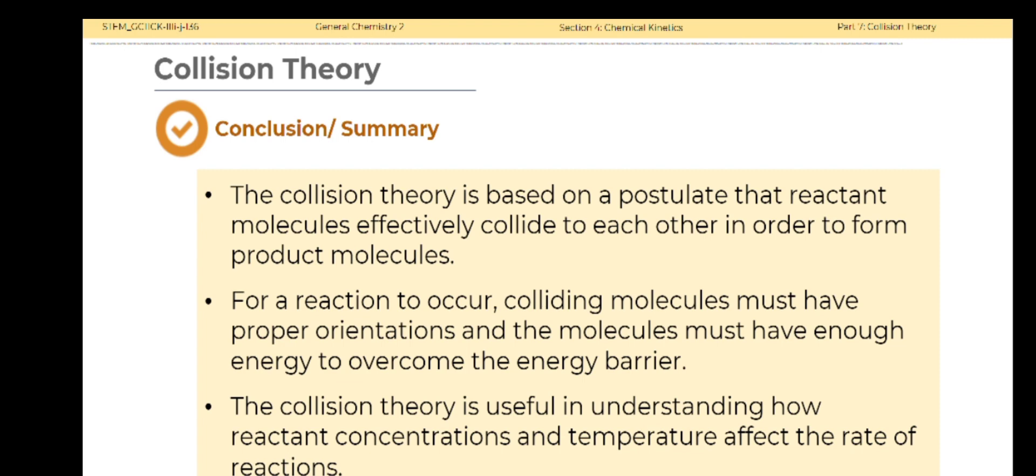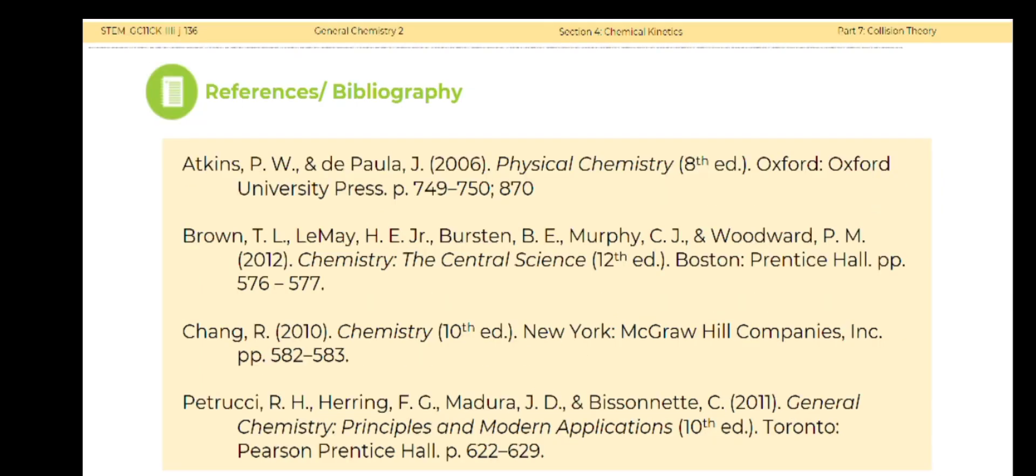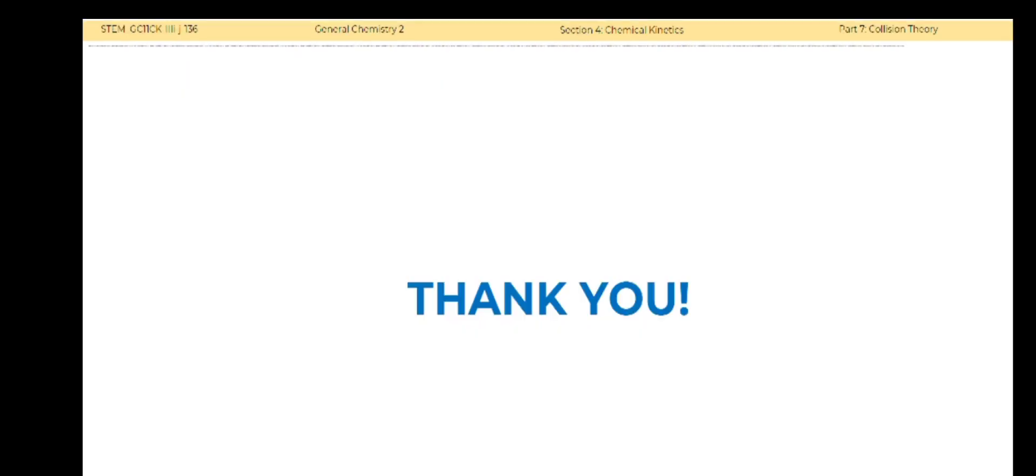To summarize, the collision theory is based on a postulate that reactant molecules effectively collide with each other in order to form product molecules. For a reaction to occur, colliding molecules must have proper orientations and the molecules must have enough energy to overcome the energy barrier. The collision theory is useful in understanding how reactant concentrations and temperature affect the rate of reaction. That's all. Thank you.